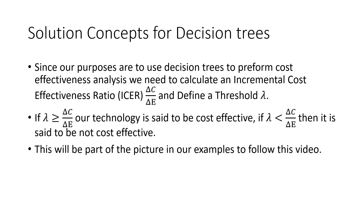In terms of a solution concept for decision trees, we need to remember our purpose is to perform a cost-effectiveness analysis. We need to calculate an incremental cost-effectiveness ratio, or ICER, and define our threshold. If our threshold is greater than or equal to our ICER, our technology is said to be cost-effective. However, if our threshold is less than our ICER, it is said to not be cost-effective, and we would not invest in that technology. This will be part of the examples that follow in this video.